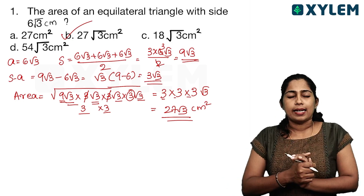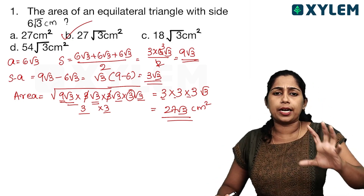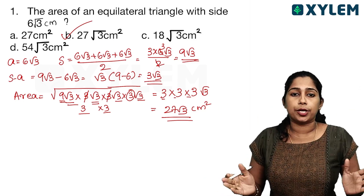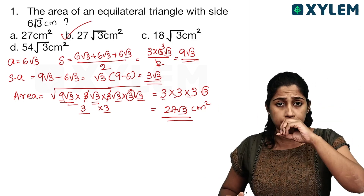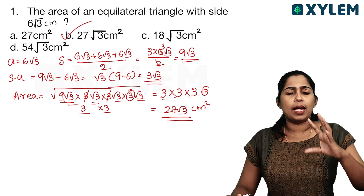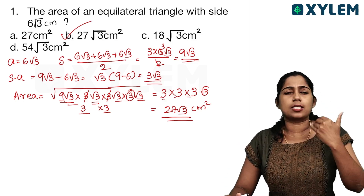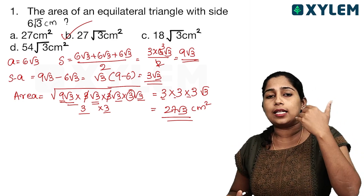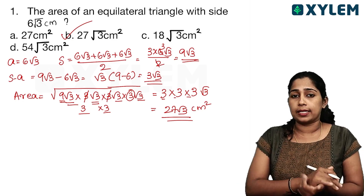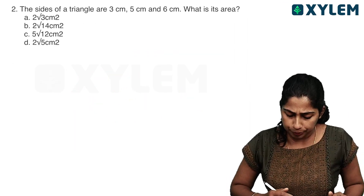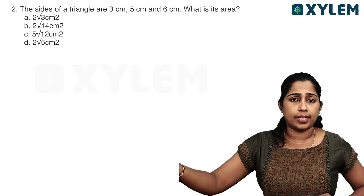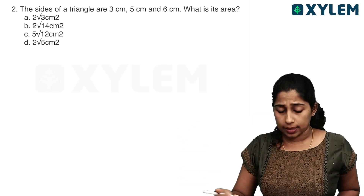If you have multiple answer options, you will be able to solve MCQ questions within seconds. You will be able to avoid lengthy calculations and cancel terms quickly. Now the next question: the sides of a triangle are given as 3, 5, and 6. What is the area?